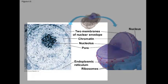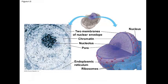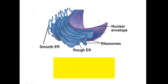This two-layer boundary of the nucleus is called the nuclear envelope. The nuclear envelope contains pores, and these pores allow things like ribosomes and messenger RNA to pass from inside of the nucleus through these pores and into the cell cytoplasm.